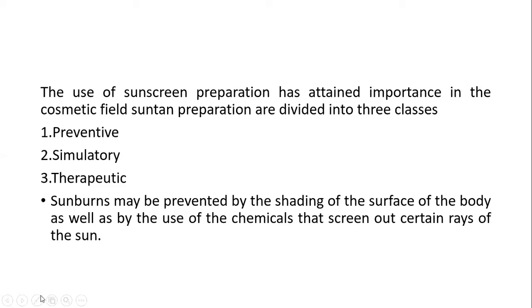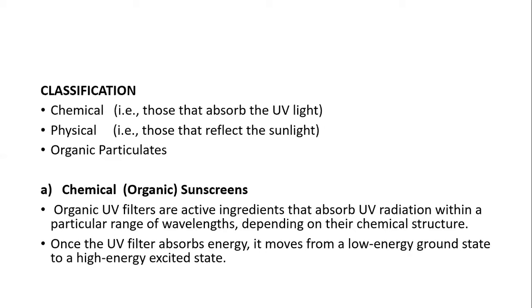Sunburn may be prevented by shading the surface of the body as well as by the use of chemicals that screen out certain rays of the sun. Sunscreen agents can be classified into three categories: chemical — those that absorb UV light; physical — those that reflect sunlight; and organic particulates. The first category is chemical organic sunscreens, where organic UV filters are the active ingredients that absorb UV radiation.